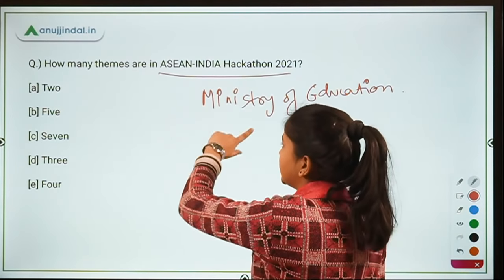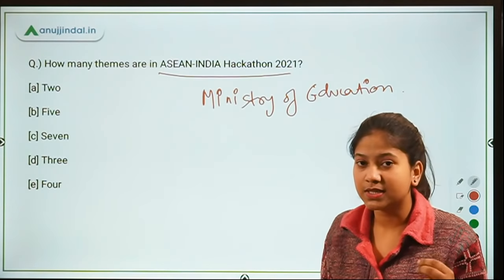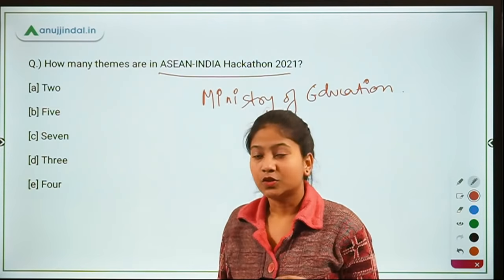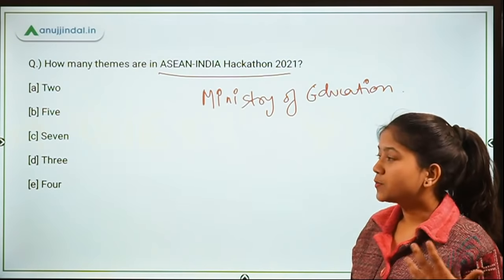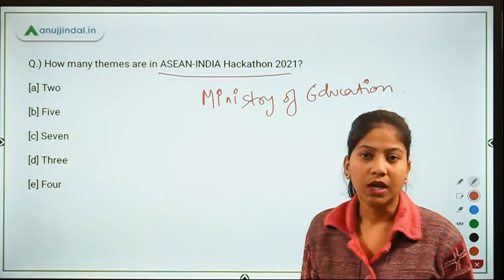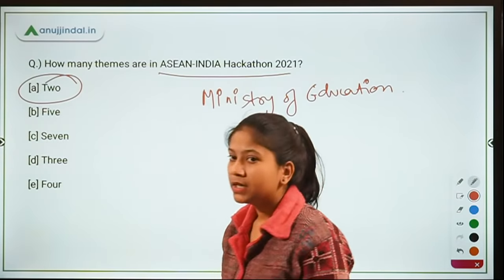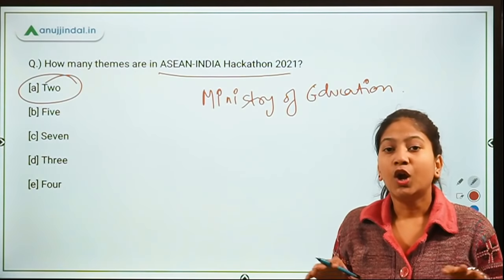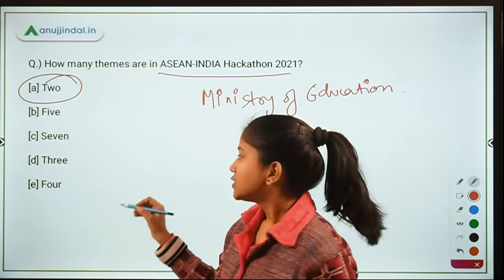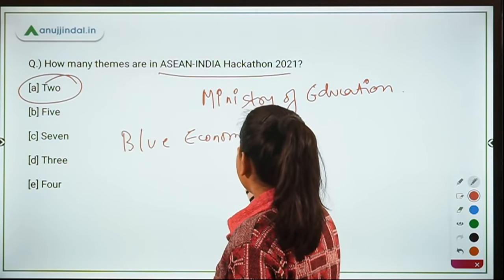The Ministry of Education has organized this hackathon. The options are: (A) two, (B) five, (C) seven, (D) three, and (E) four. The right answer is option A — two. Broadly, this hackathon is based on two themes, and those two themes are blue economy and education.